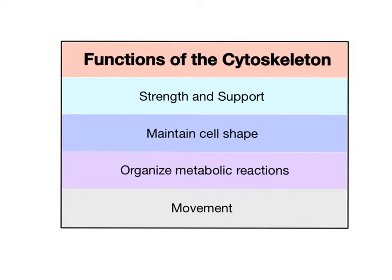The cytoskeleton also functions in movement, helping to move tiny organelles such as transport and secretory vesicles, as well as larger organelles throughout the cell. It also enables the movement of entire cells, such as sperm cells that have a long flagellum that allows the sperm to swim to the egg and fertilize it. The surface membranes of some cells, like the epithelial cells lining the respiratory tract, contain clusters of cilia that help filter and catch debris before it makes its way to the more delicate respiratory membranes of the lungs.